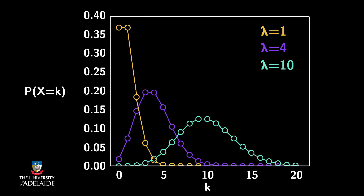Suppose we are counting the number of occurrences of an event in a given interval of time, distance, or area. For example, how many new friends a Facebook user gets in a day. The number of events is a random variable which may or may not follow the Poisson distribution.